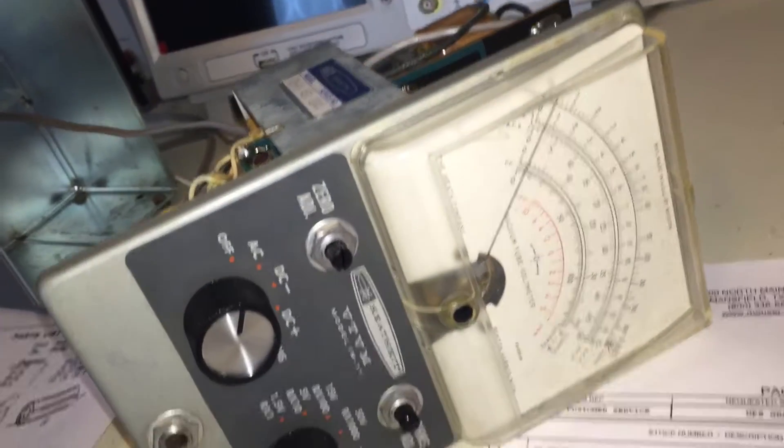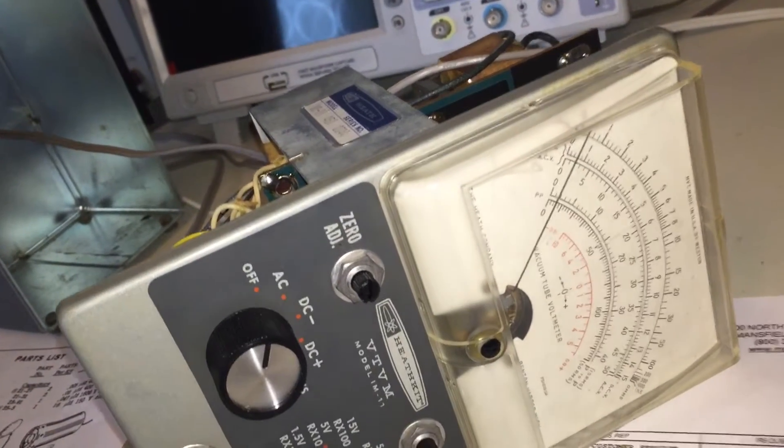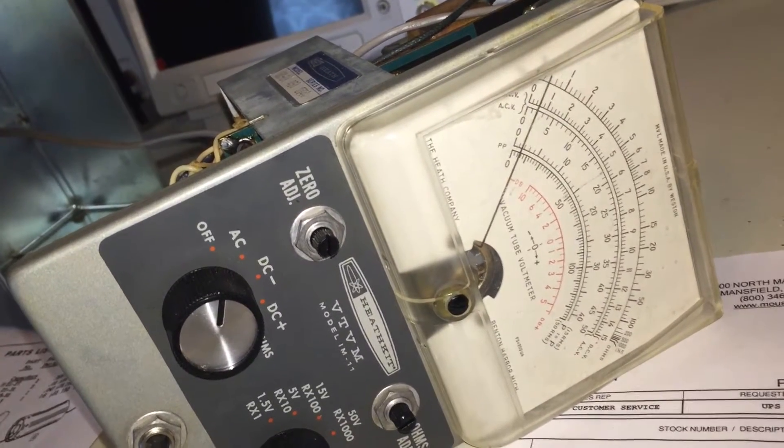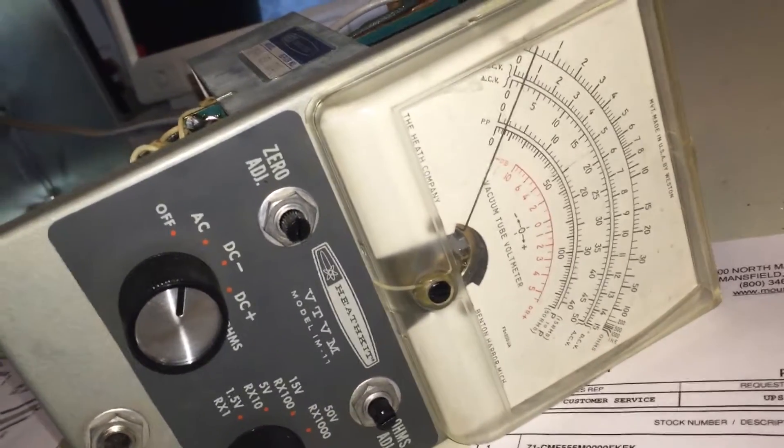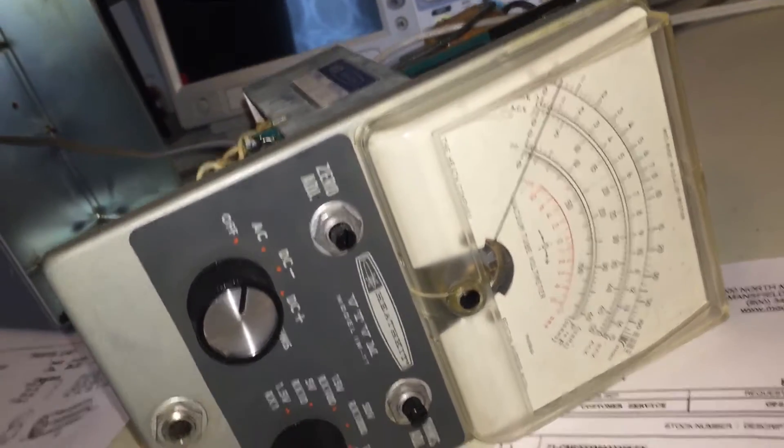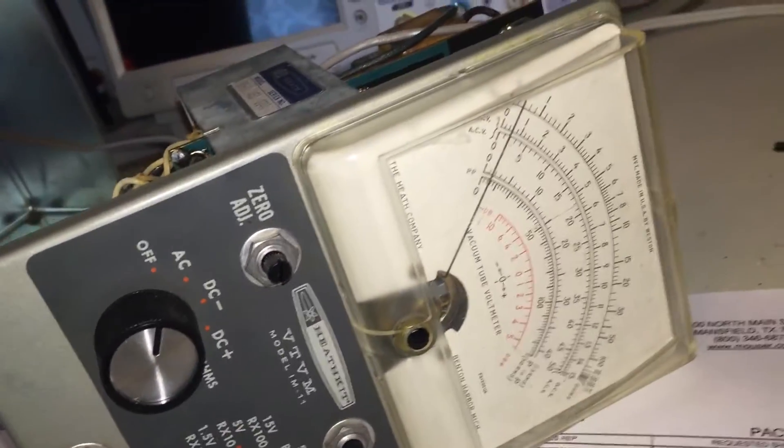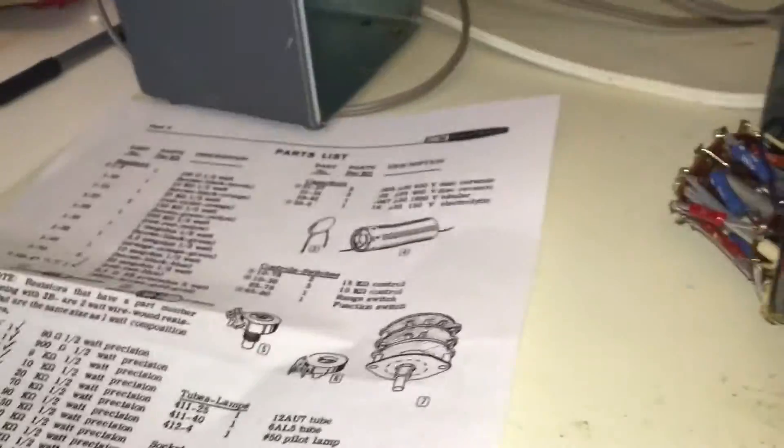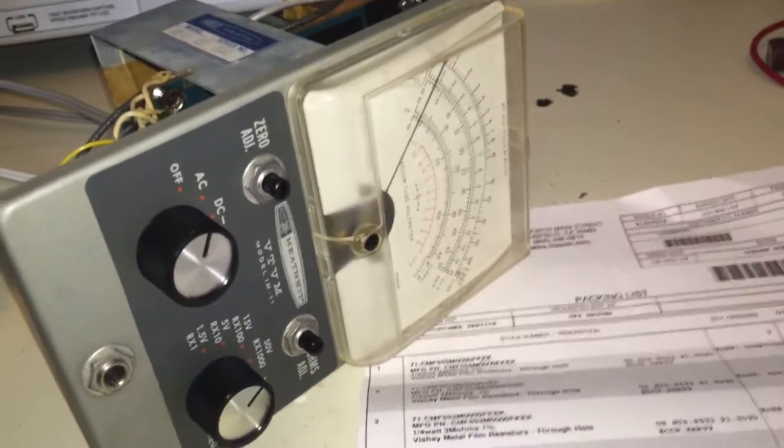For those who don't know what a VTVM is, when you're working on tube amplifiers, there's a very, very high impedance that's used when this is employed to measure. It doesn't have an impact on the circuit you're measuring. Other voltmeters, when you connect it to the circuit to take a measurement, the voltmeter in the circuit actually affects the value you're measuring, which is obviously extremely bad. This VTVM has just an astounding value. It's like two megaohm or something like that or more. So it's a wonderful thing to own.